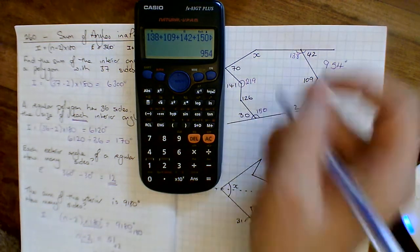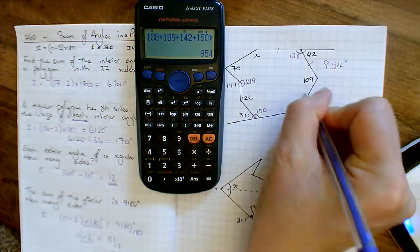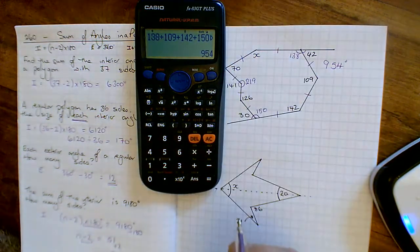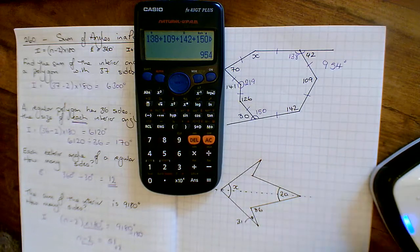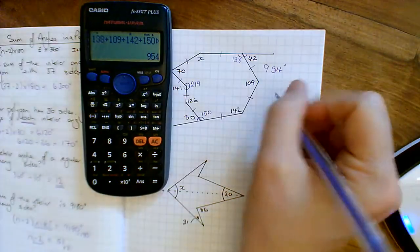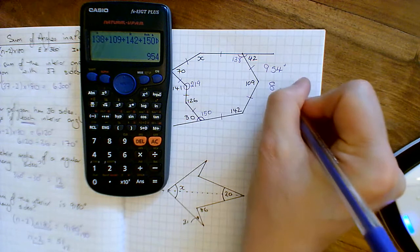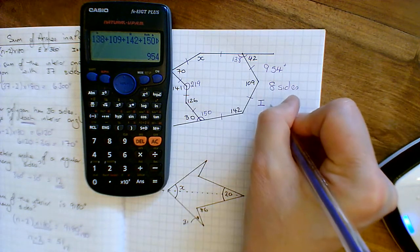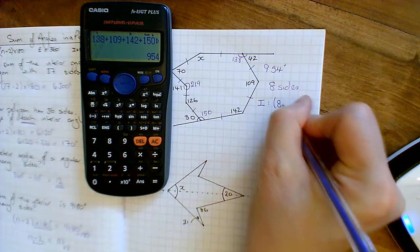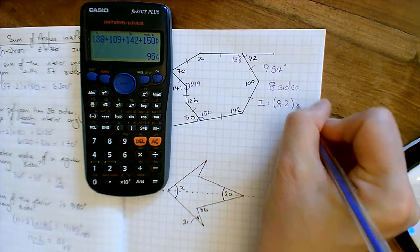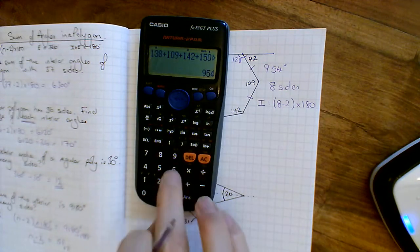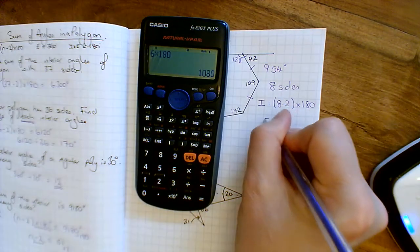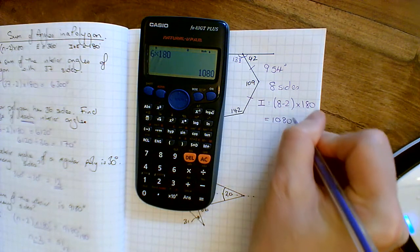Right, how many sides is there now? Let's have a look. So there's one, two, three, four, five, six, seven, eight sides on this shape. So the inside angles, eight sides, so the inside angles are going to be 8 take away 2, the number of sides take away 2, times 180. So that's 6 times 180, which is 1080, which equals 1080 degrees.